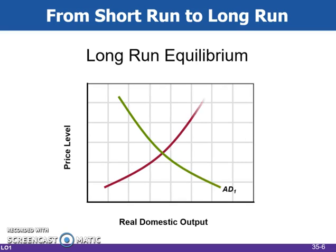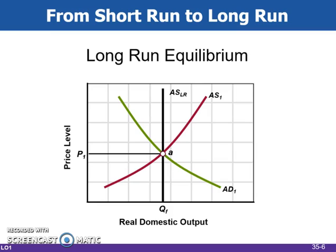Bringing in the aggregate demand curve, we now have a graph with three curves: short run aggregate supply, long run aggregate supply, and aggregate demand, which is the same regardless of short run or long run. All three intersect at the long run outcome, which is the nation's natural level of unemployment. In the U.S., that's assumed to be between 4 and 6%.